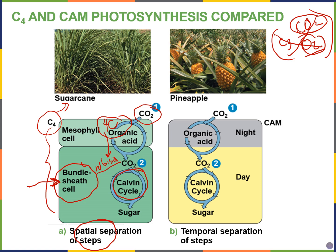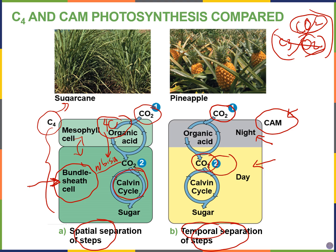Another set of plants called CAM plants — which stands for crassulacean acid metabolism — includes succulents like pineapples. They separate the steps of the Calvin cycle through time: at night when it's cool and dry they open their stomata to let CO₂ in, and during the daytime when it's hot and they close their stomata to prevent water loss, that's when rubisco binds to CO₂ and allows the Calvin cycle to continue.